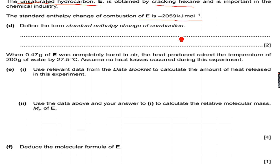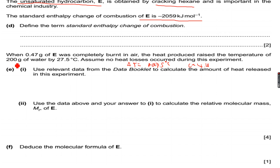When 0.47 grams of E was completely burnt in air, the heat produced raised the temperature of 200 grams of water by 27.5 degrees Celsius. Assume no heat losses occur during this experiment. So delta T is equal to plus 27.5 degrees Celsius, and c is equal to 4.18 for water because it is the temperature of the water that is raised, not of E. So M is equal to 200 grams.